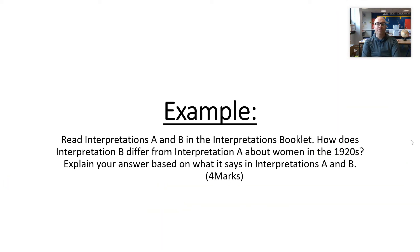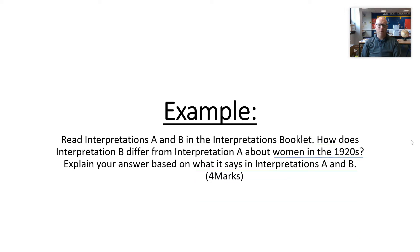Here's an example from a previous examination paper: 'Read interpretations A and B in the interpretations booklet. How does interpretation B differ from interpretation A about women in the 1920s? Explain your answer based on what it says in interpretations A and B.' We look at the question and break down what it's after. The 'how' is important. The focus is women in the 1920s, and we use the content of the interpretations themselves to answer. It's only four marks, so it shouldn't take more than five minutes.